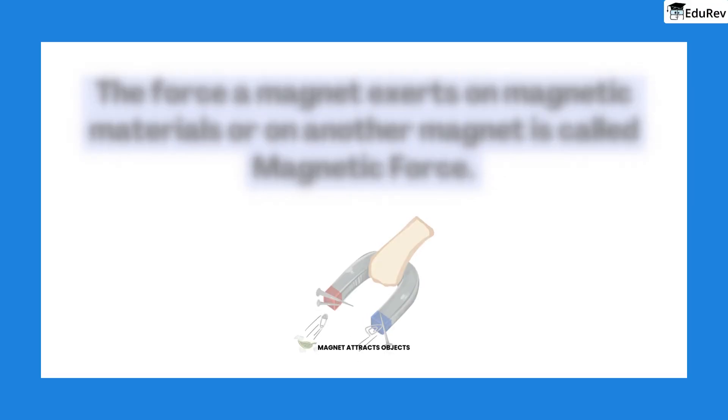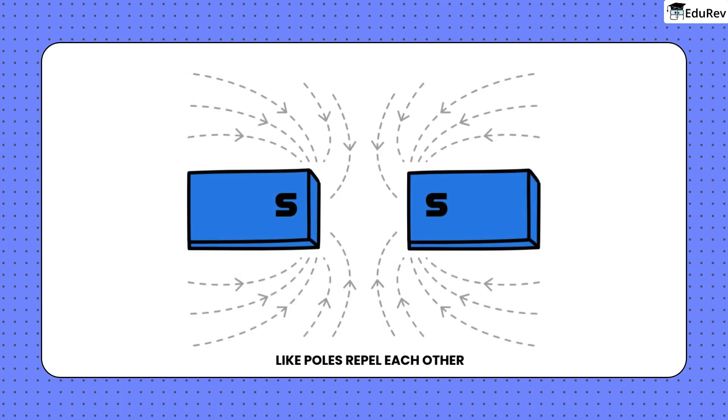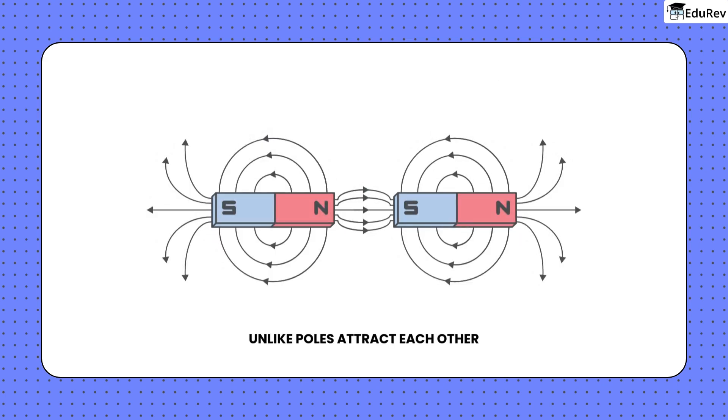Magnetic force. The force a magnet exerts on magnetic materials or on another magnet is called magnetic force. Like poles of magnets repel each other. Unlike poles attract.